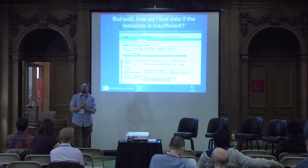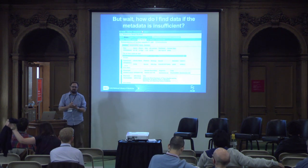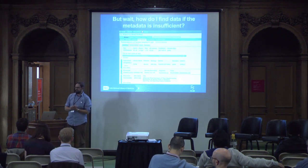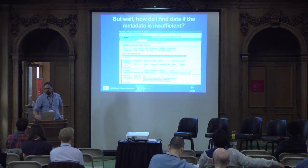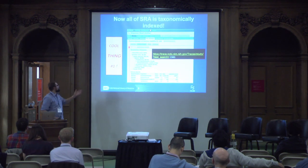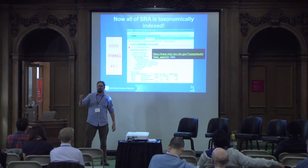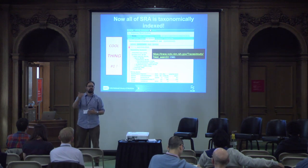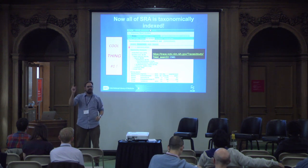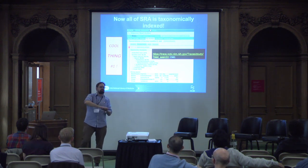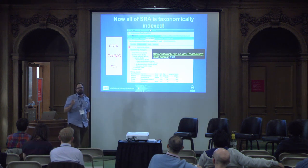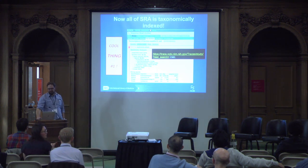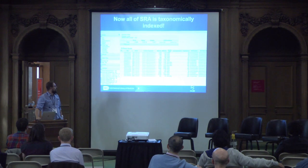But how do you find data if metadata is insufficient? The two main things I want to talk about are: one, contextualized indexing of data, and two, getting out small data slices. We've taxonomically indexed all of SRA using K-mers. If you're interested in some funky family of viruses, you can now go to the SRA, which has millions of records, and find your funky family of viruses. That's something we've been very proud of.